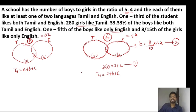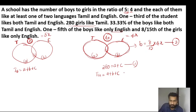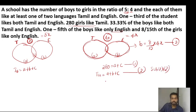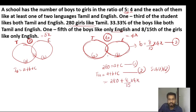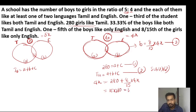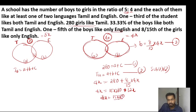Equation number 2: total girls — A plus B plus C. A plus C equals 280, and B equals 8 by 15 into 4x. Substitute equations one and two into three. A plus C equals 280, plus B equals 8 by 15 into 4x, and total girls equals 4x. So this gives us 15 into 280 plus 32x equals 4x times 15.